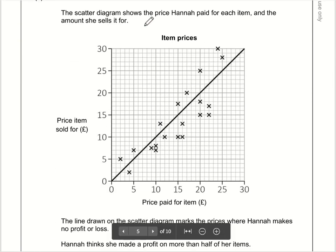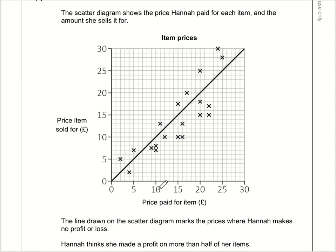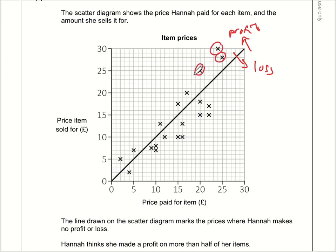Part c: the line drawn marks the prices where Hannah makes no profit or loss. For example, this point here — she paid £10 and sold it for £10. Any dot above the line means it's been sold for a higher price than it was bought for; for example, she bought it for £5 and sold it for £7. So above the line equals profit. Counting items above the line: one, two, three, four, five, six, seven, eight. Out of twenty total items, she made a profit on eight.